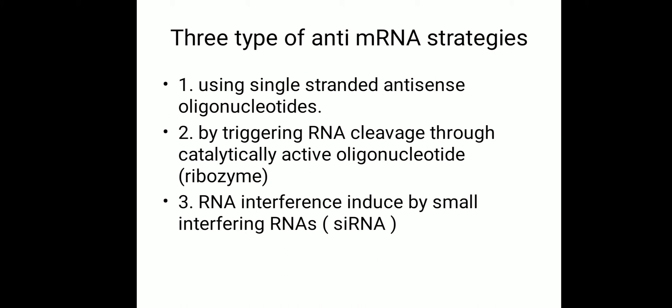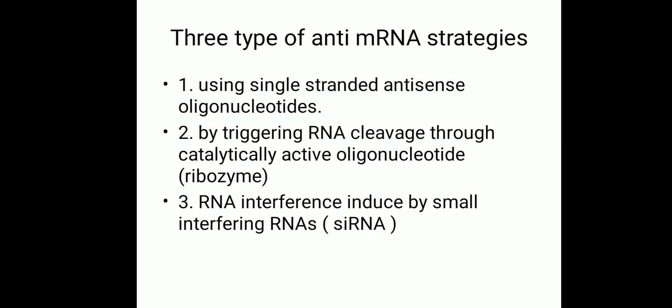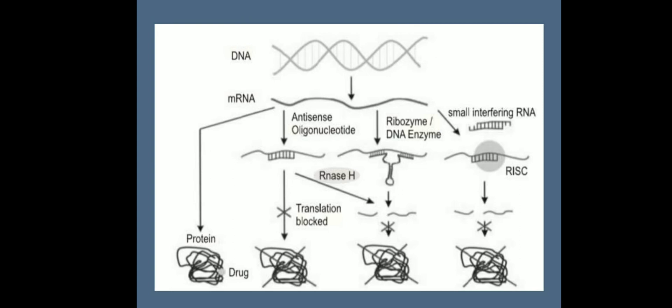There are three types of antisense mRNA strategies. The first is using a single-stranded antisense oligonucleotide. The second is by triggering RNA cleavage through the catalytic activity of an oligonucleotide enzyme — ribozyme is an enzyme. The third is RNA interference mediated by small interfering RNA (siRNA). DNA is transcribed into mRNA, and then externally added antisense RNA — the antisense oligonucleotide, ribozyme, or small interfering RNA — binds to the mRNA and inhibits its activity.